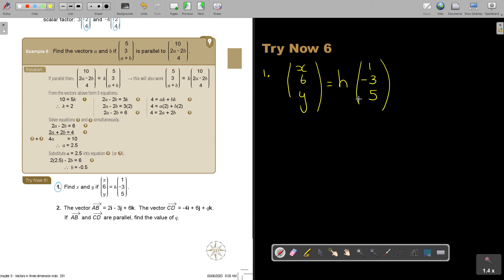So if I say find x and y if... Let's just first write the original down. x, 6, y equals h, 1, negative 3, 5. So if I'm starting with this, I think the best will first be... I'm going to do it like this. x, 6, y, and I'm going to multiply the h in. So therefore, x is equal to h.